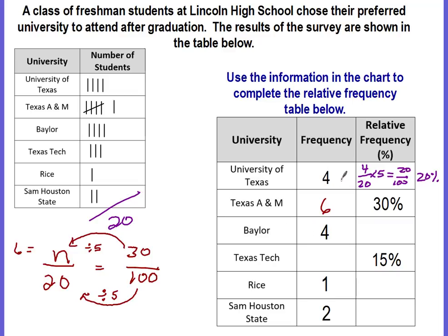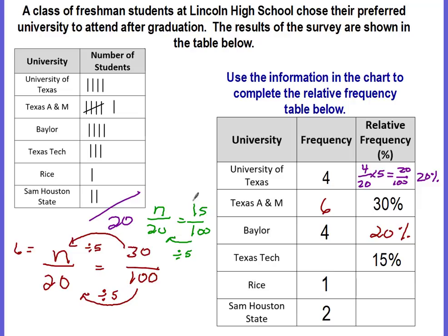Baylor's frequency was four, which is 20 percent — no extra work needed. For Texas Tech at 15 percent, we use the percent proportion: unknown part out of a total of 20 equals 15 out of 100. We're still going from 100 to 20, dividing by five. And 15 divided by five gives us three. So three students chose Texas Tech.